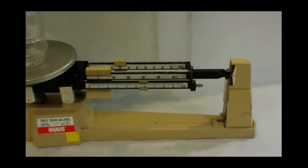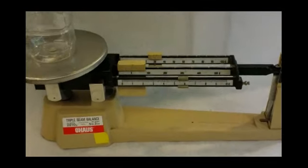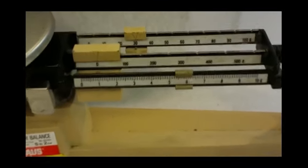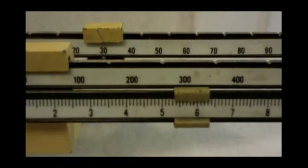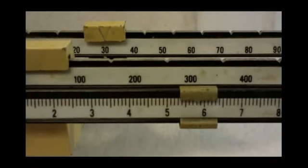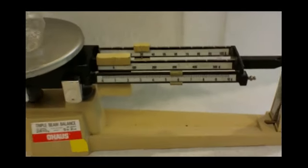So now that we have our mass, we can record it. Any type of measurement that you get from a scale, you want to make sure you put into your lab journal. So in this case, if you read it, it looks like 35.8.